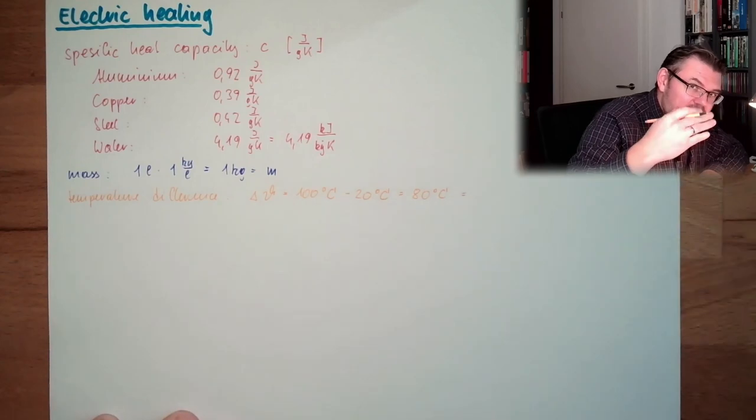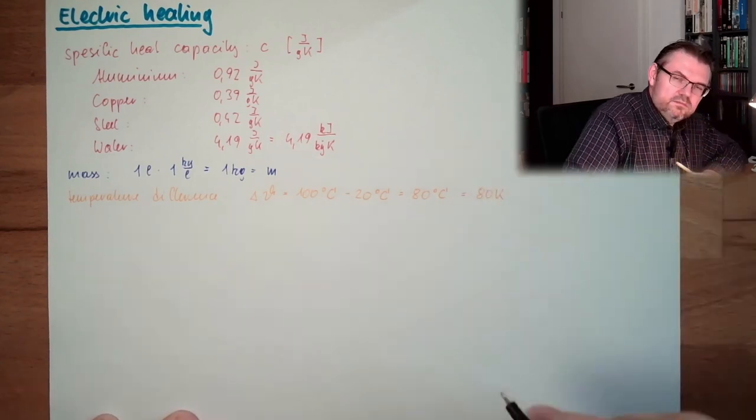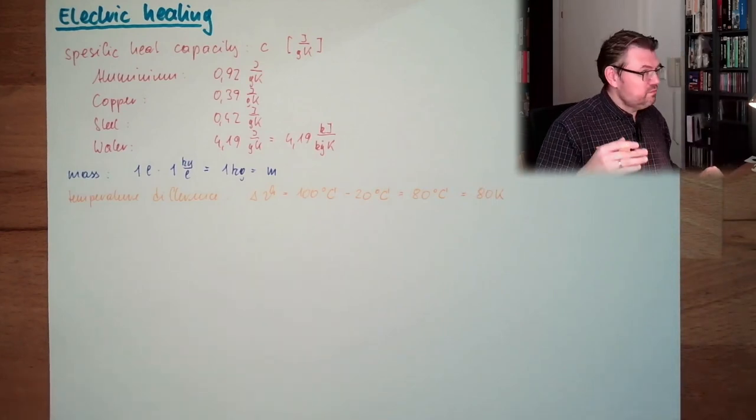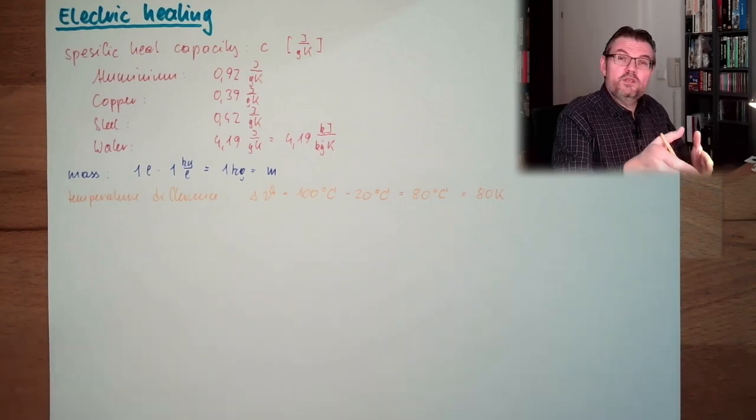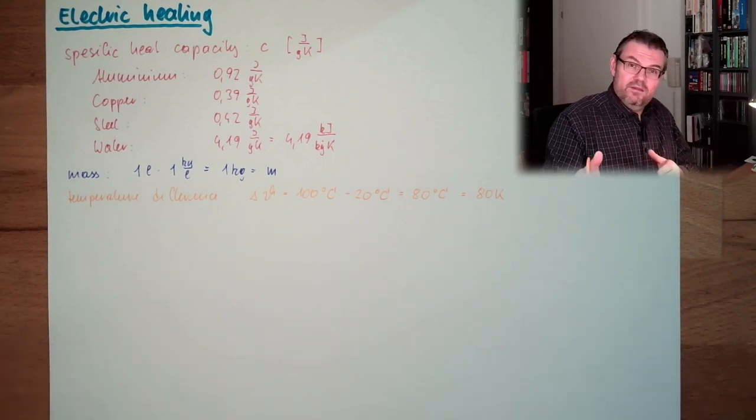And this, because it's a difference, a temperature difference, is also 80 kelvins. Because it's a difference. I don't have to take into account absolute zero. Because both temperatures have absolute zero. 80 degrees Celsius difference is 80 Kelvin difference.